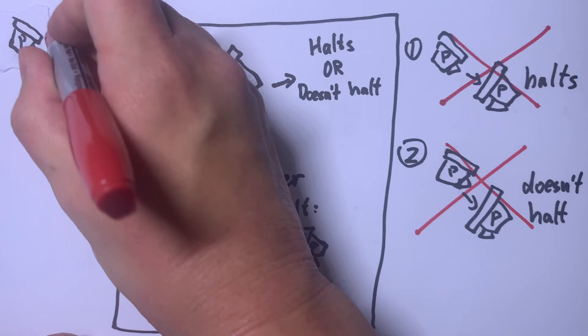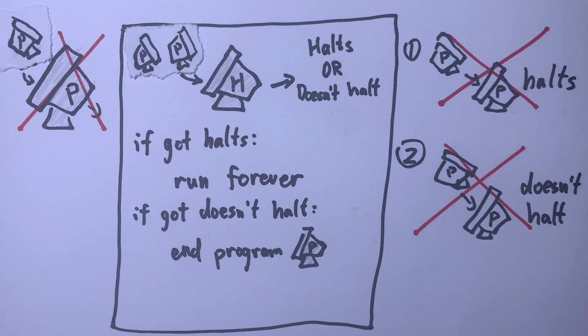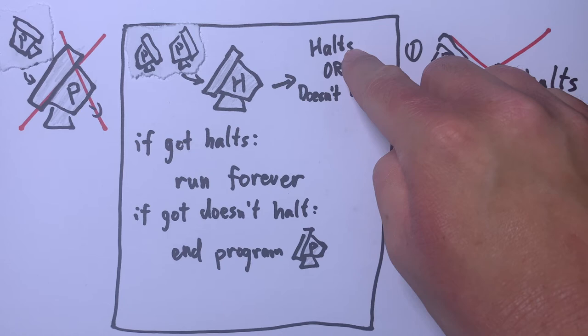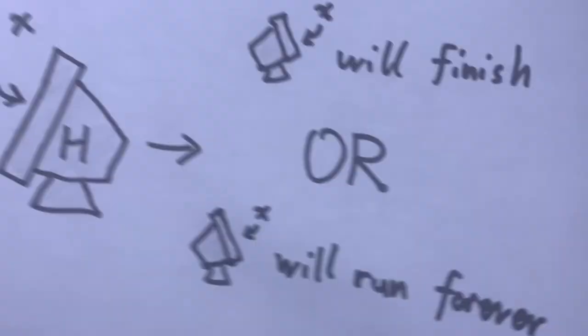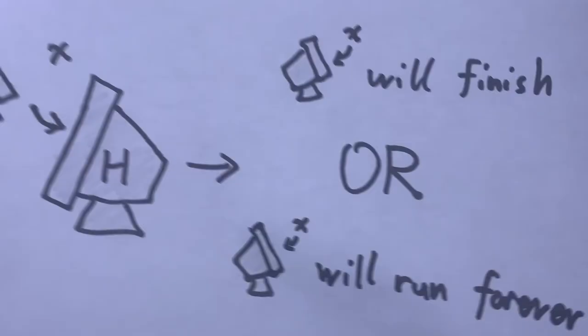Remember, P is only possible if there is a program H that can always tell you whether a program will halt. So since P is not possible, H must not exist. Therefore, it is impossible to write a program that will always tell you whether another program halts.